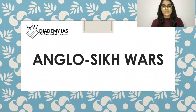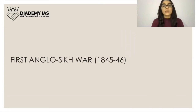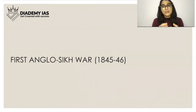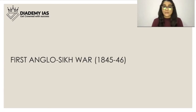Hello everyone, this class is presented by Diadomi IES. We will discuss the Anglo-Sikh Wars — there are two: the First Anglo-Sikh War and the Second Anglo-Sikh War. The First Anglo-Sikh War took place from 1845 to 1846. After the 10th Sikh Guru Gobind Singh, the strong leader was Banda Singh Bahadur, and after his death the Sikh command came under Ranjit Singh. After Ranjit Singh's death, the Sikh Empire weakened, which is why these wars occurred.